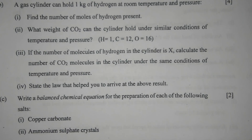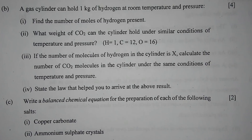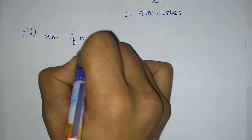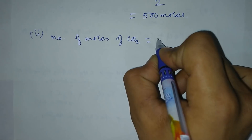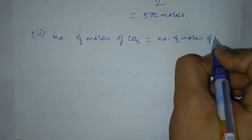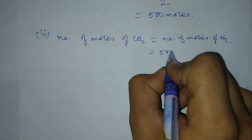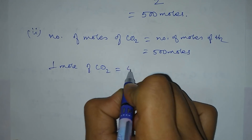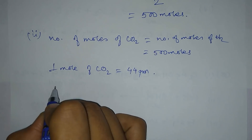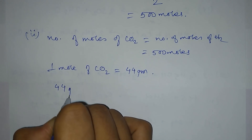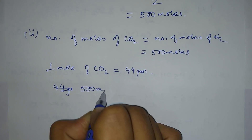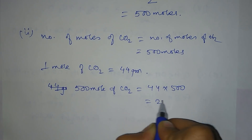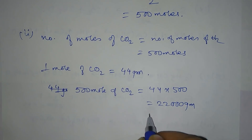Number 2 — what weight of CO2 can the cylinder hold under similar conditions of temperature and pressure? Number of moles of CO2 equals number of moles of H2, which is 500 moles. Since 1 mole of CO2 equals 44 grams, 500 moles of CO2 equals 44 × 500 = 22,000 grams, or 22 kg.